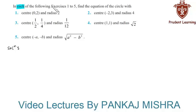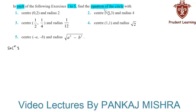In each of the following exercises 1 to 5, find the equation of the circle. In this question we have the radius and coordinates of the center of the circle, and we are required to find the equation of the circle. Let us see the solution for each question one by one.